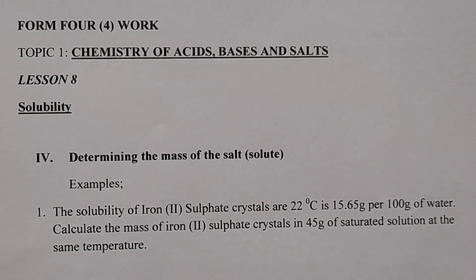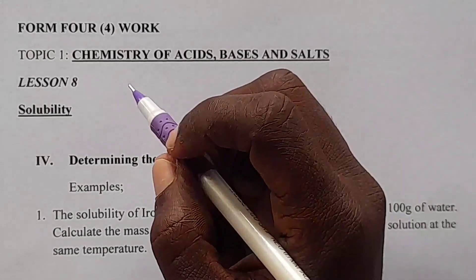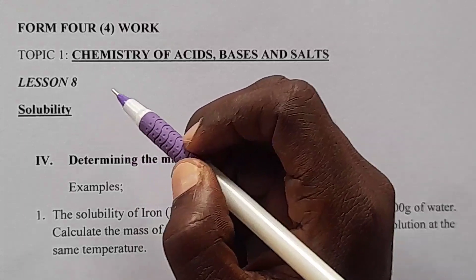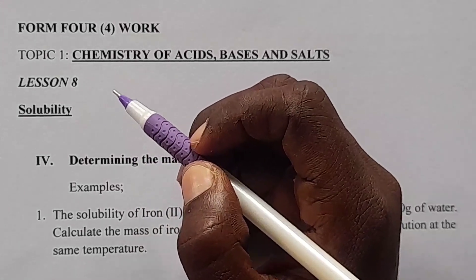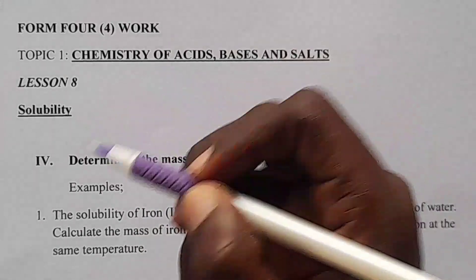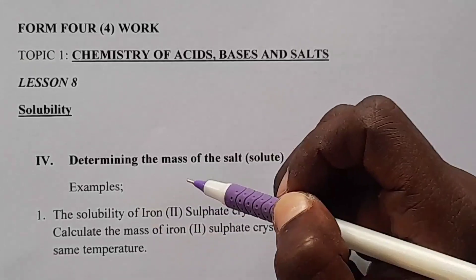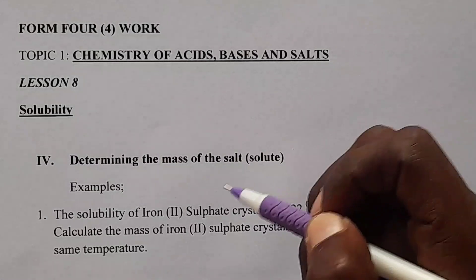Hello learners, welcome to Form 4, Lesson 7. We were dealing with solubility — we were in Romeo 3 — but today we are dealing with Romeo 4: determining the mass of the solute.